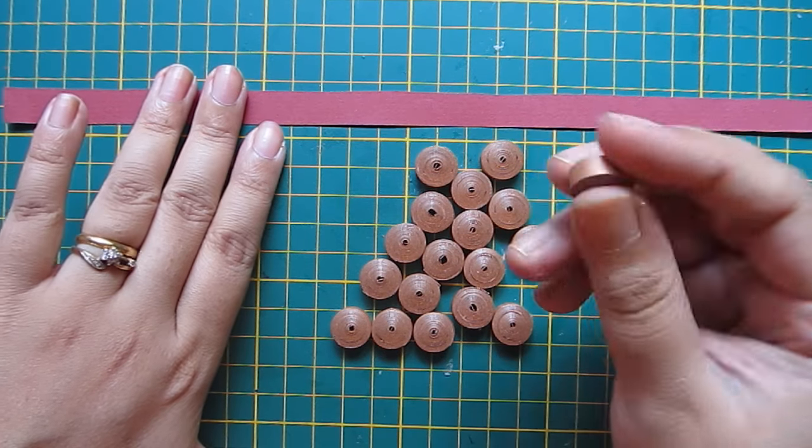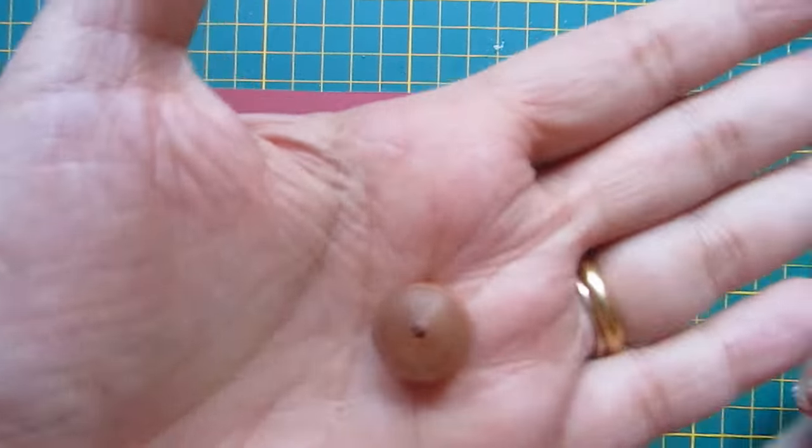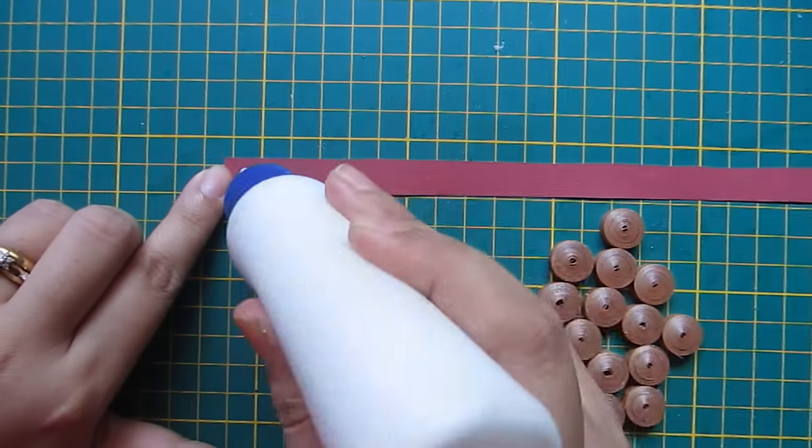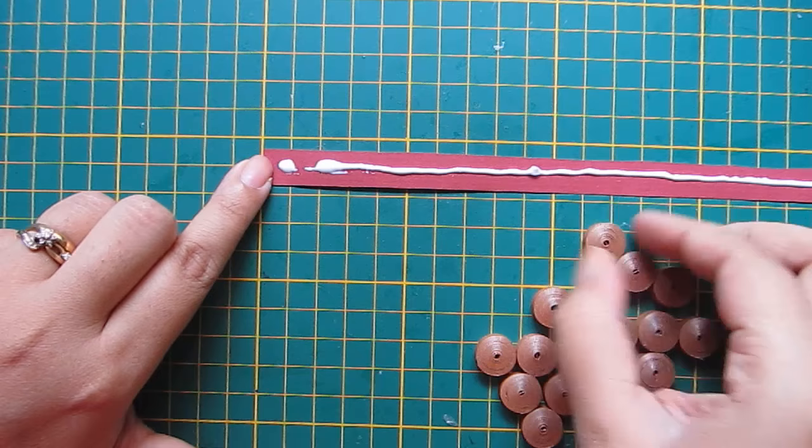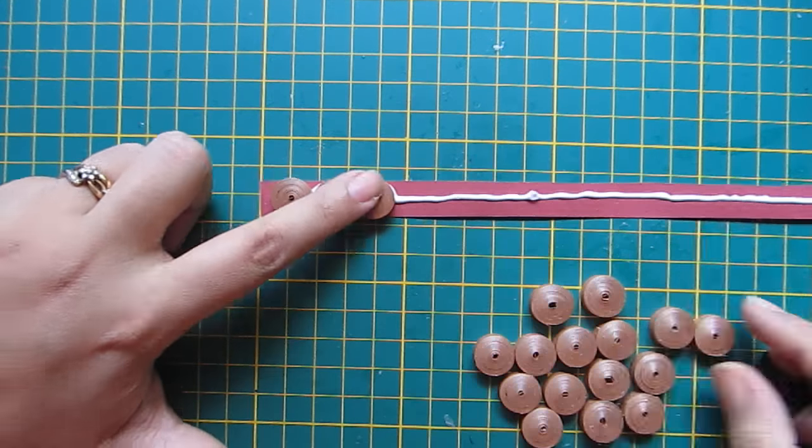Now to decorate the handle I am using these coils which I made using 5mm strips, and I have joined two strips together to make this tight coil. Now I am adding the glue on the paper strip and just add coils one by one.